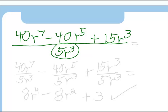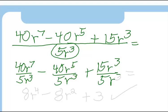It's very easy. All you have to do is separate this problem into three separate fractions and simplify them separately. Let's do it. 40r to the 7th over 5r to the 3rd minus 40r to the 5th over 5r to the 3rd plus 15r to the 3rd over 5r to the 3rd.